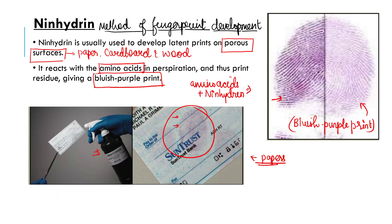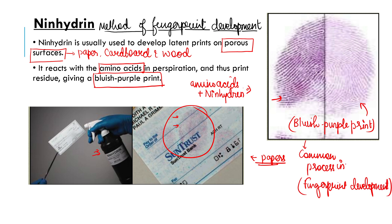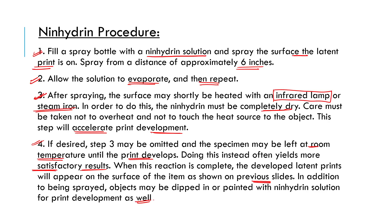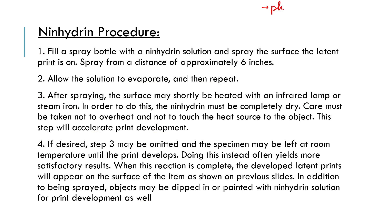This is your ninhydrin procedure — a very common process in fingerprint development and enhancement. There are three ways to develop fingerprints: first is physical techniques, second is chemical method, and third is UV light and different illumination or fluorescent techniques. We are done with physical methods. We will start the chemical method in the next class.